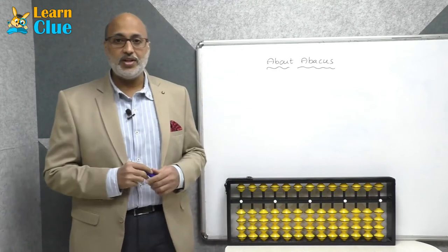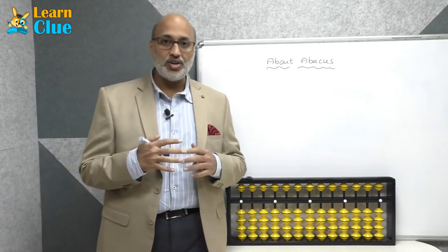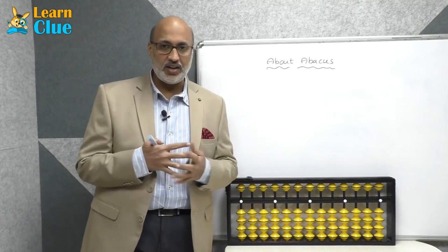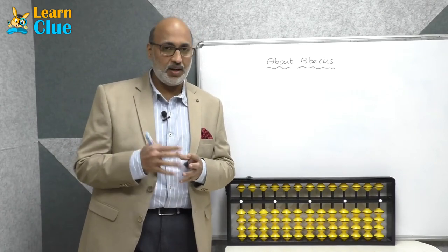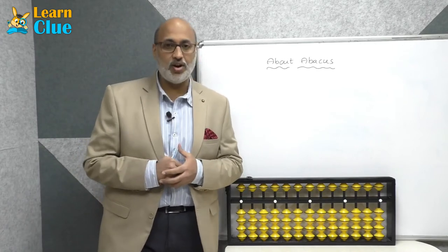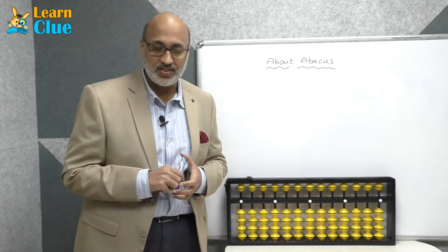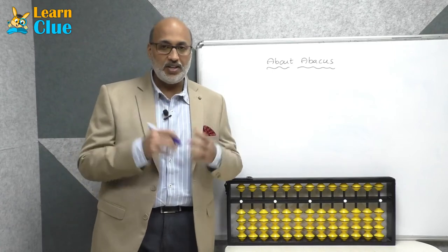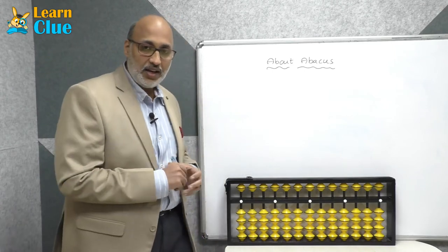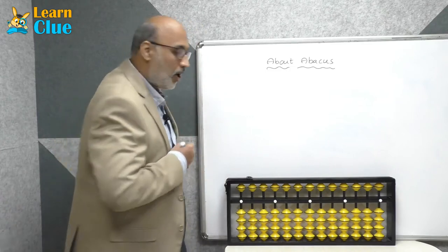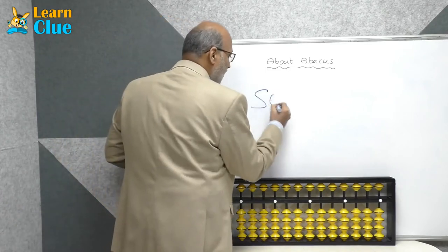Abacus was invented by Greek people 2,500 years ago. Later this concept was copied by many countries and continents, but there are only two countries that developed this concept — China and Japan. We follow the Japanese method of abacus. In Japanese, abacus is called soroban.